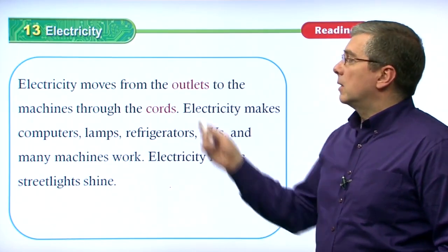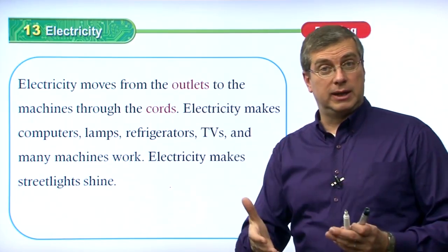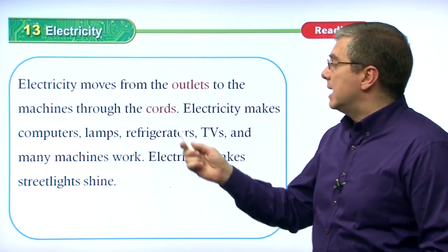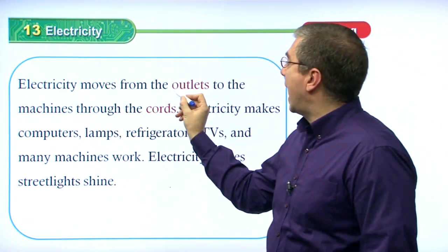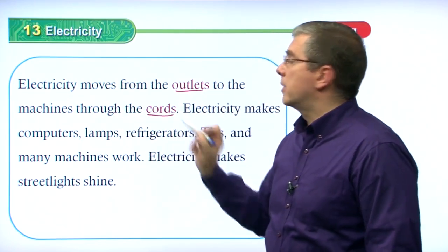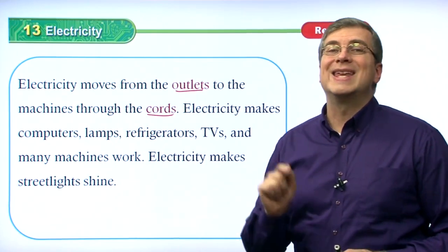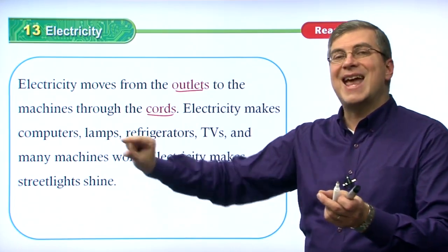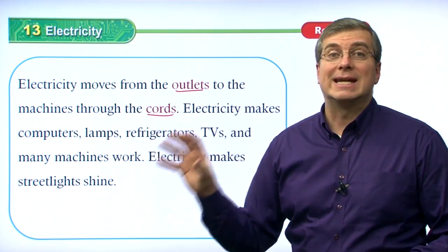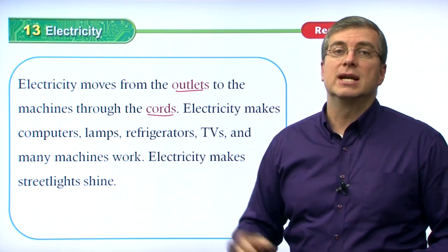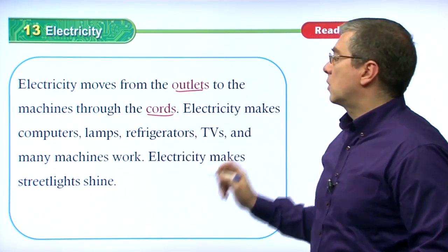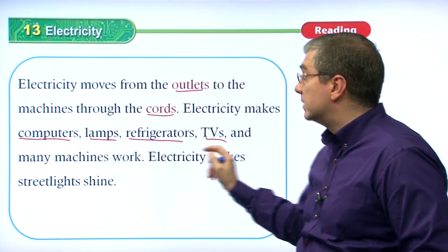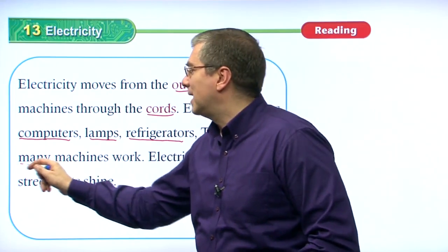Once electricity comes to your house, it goes through the walls in wires and comes out in an outlet. Electricity moves from the outlets to the machines through the cords. You plug a cord into the outlet — that cord is connected to a machine, and that's how the machine gets the power, the energy it needs. Electricity makes computers, lamps, refrigerators, TVs, and many other machines work.